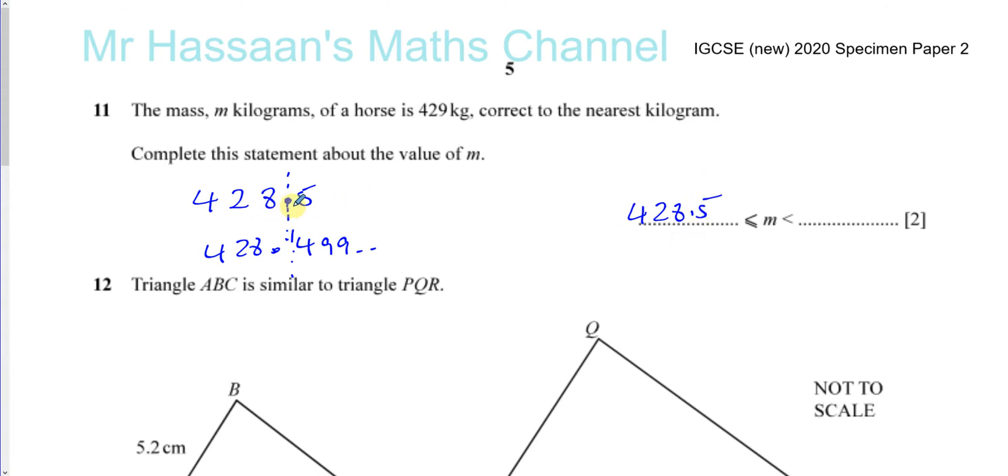So what's the highest it could have been? Well, if you think about it, 429.5. If you round that, it's going to give you 430.